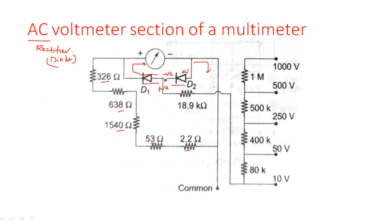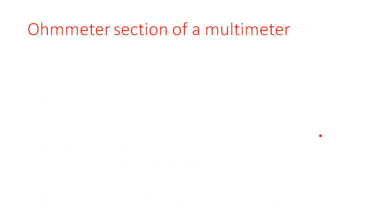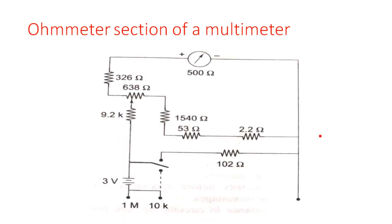The common path is the same: 2.2 ohms, 53 ohms, 1540 ohms, 638 ohms, 326 ohms, and the meter. Additionally, the diodes are included, and at this junction a resistive path from the voltage divider network feeds in. The AC voltage ranges allow measurement from 10 to 1000 volts — similar to the DC voltmeter range.